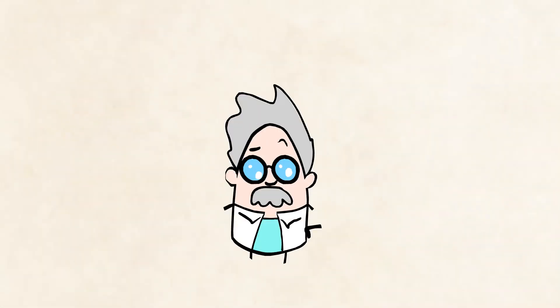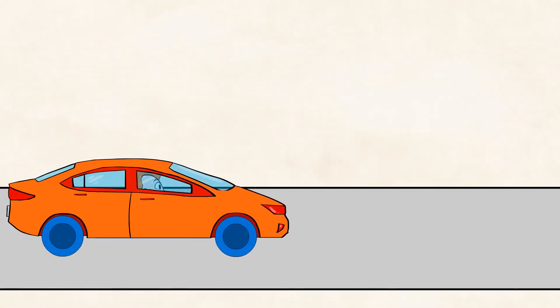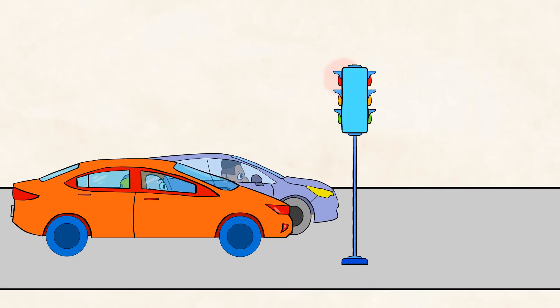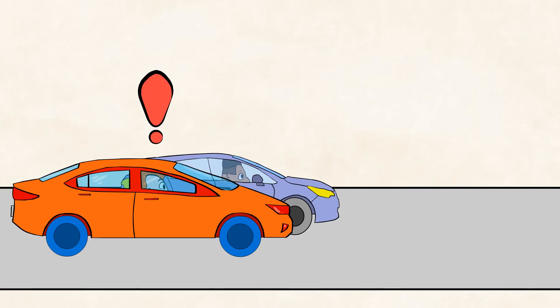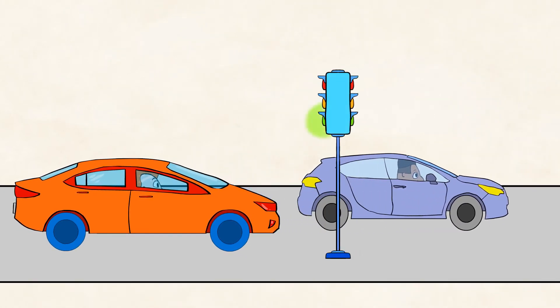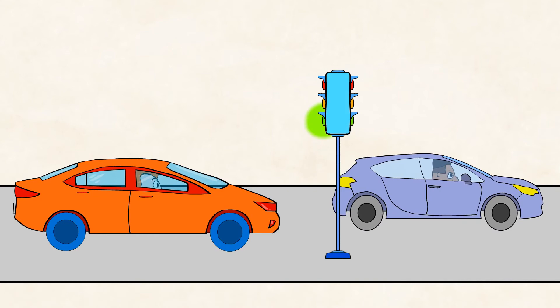Here's another example that you might have experienced. Imagine you're in a car, stopped next to another car at a red light. Suddenly, you think your car starts moving backward. But in fact, it was the other car moving forward when the light changed to green. It felt like you were moving backwards.